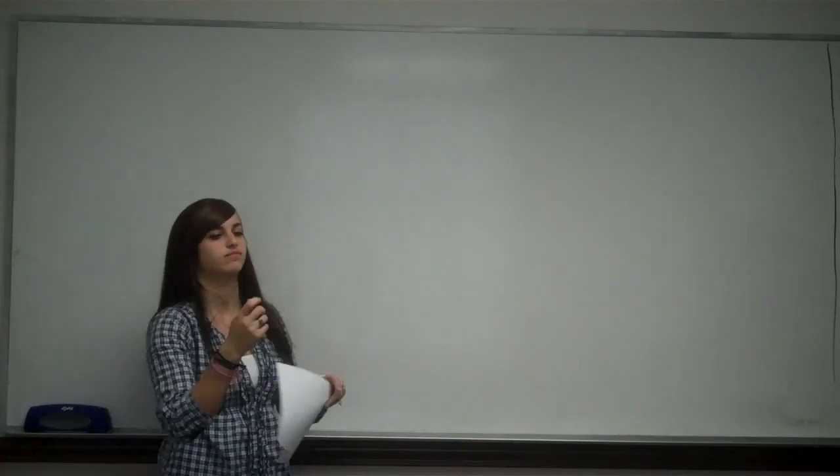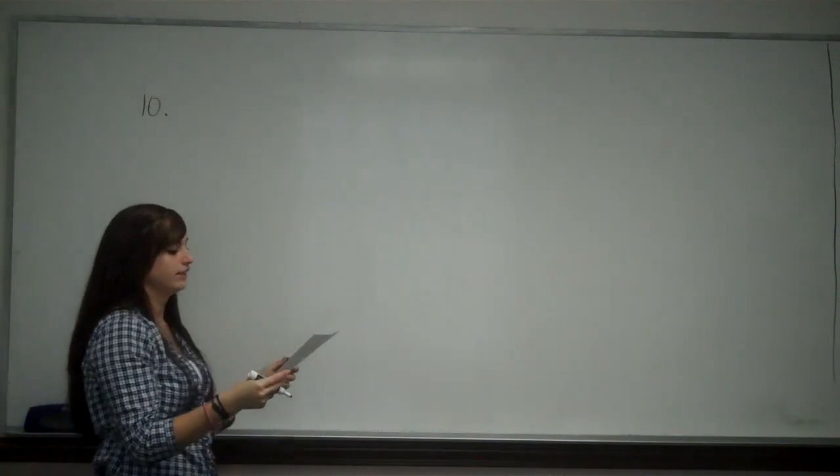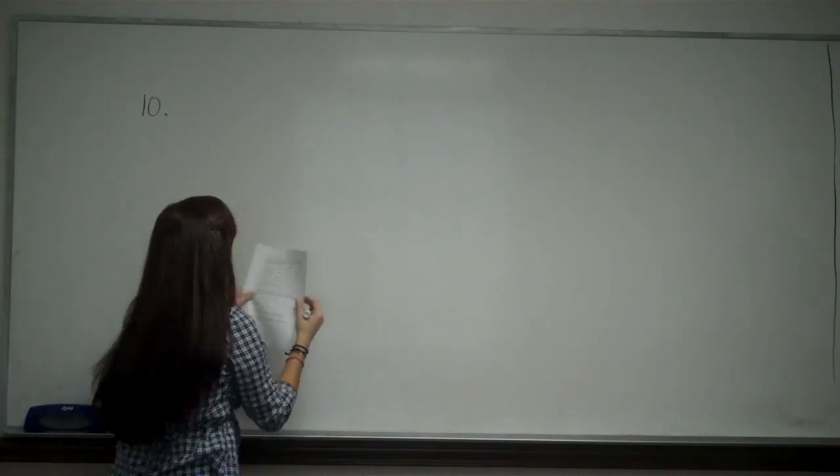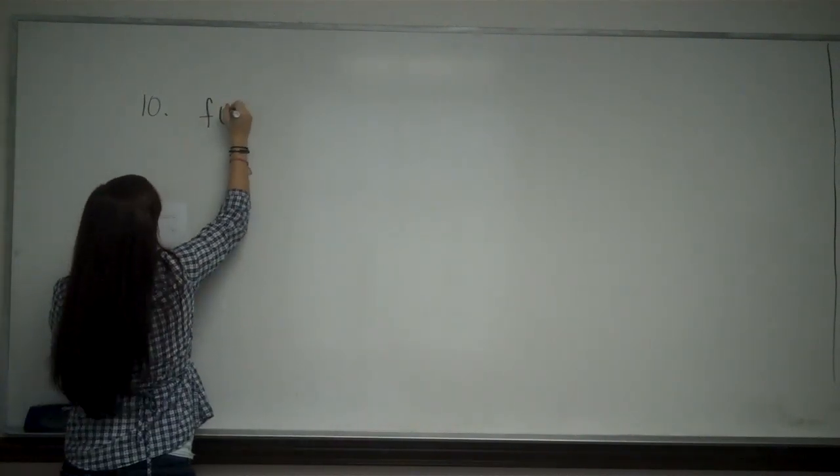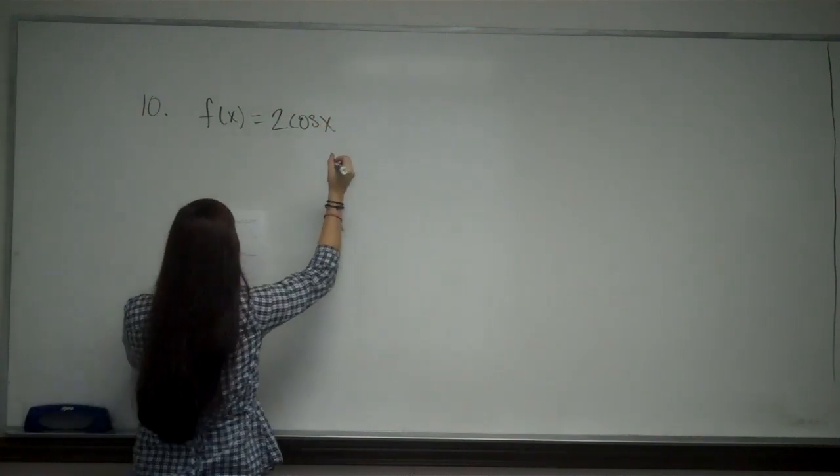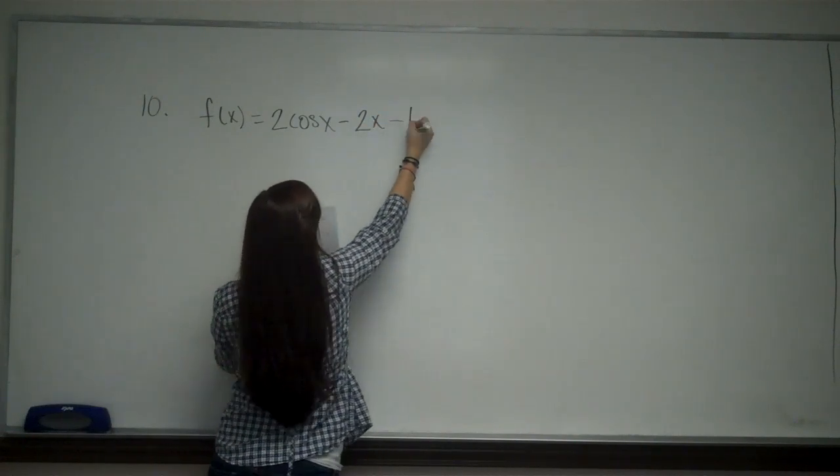I am going to do number 10. So number 10 says, according to the intermediate value theorem, the function f(x), write down the function, equals 2cos(x) - 2x - 1.